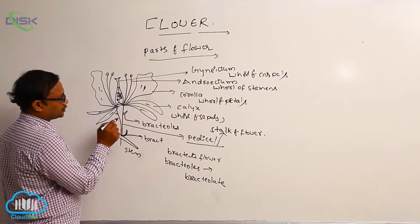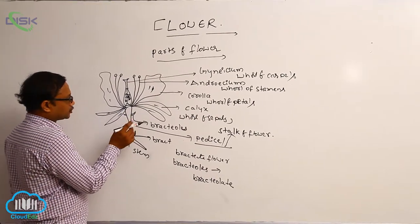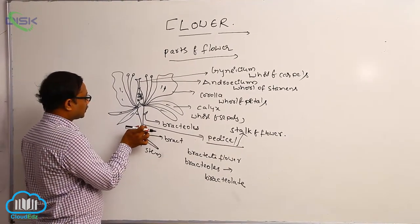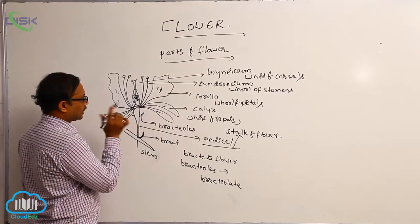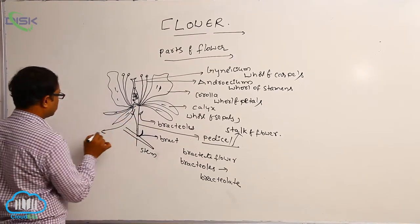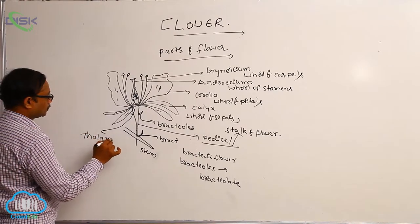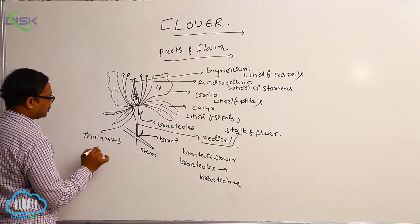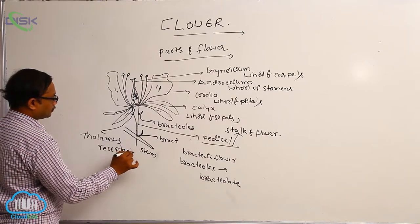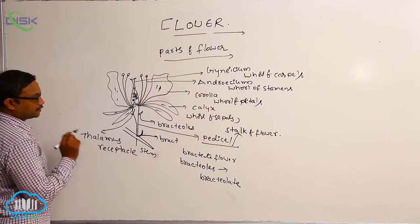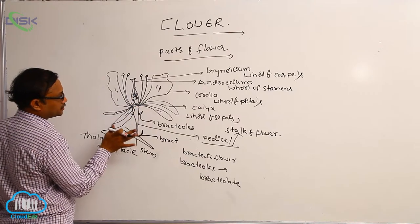Flowers are arranged on the thalamus — the tip of the pedicle. The swollen tip of the pedicle is known as the thalamus, also known as the receptacle. On the thalamus or receptacle, floral leaves are arranged in four whorls.